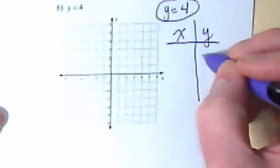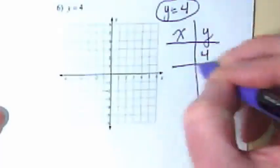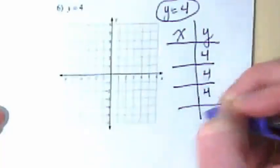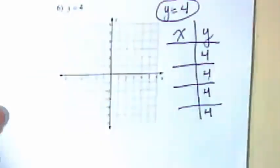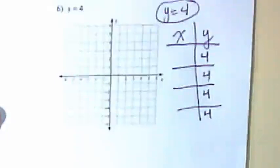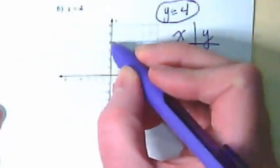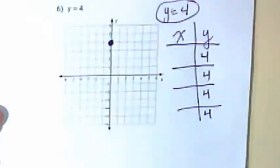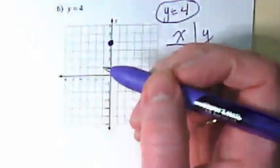That means I could put four different, three or four different points on this graph, but every single one of them, the y is going to have to equal four. Four, because the equation told us so, right? Let's start with the y-intercept then. If I put this here, what is the coordinate for the x on that? Right.